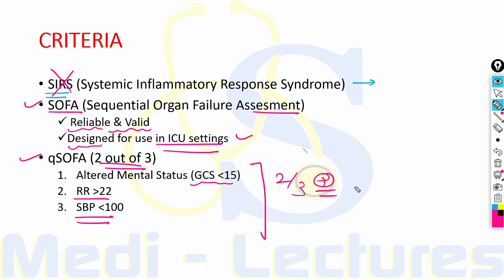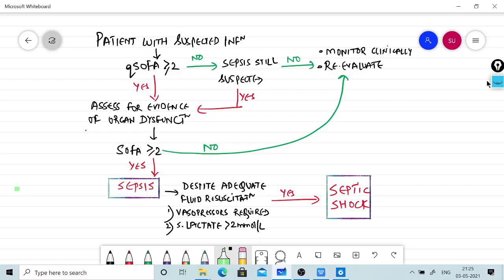Q SOFA is used in emergency department when detailed lab results are not available. When the Q SOFA score is positive, it is a marker of increased risk of death or prolonged hospitalization. Now let's see the algorithm for the diagnosis of sepsis.